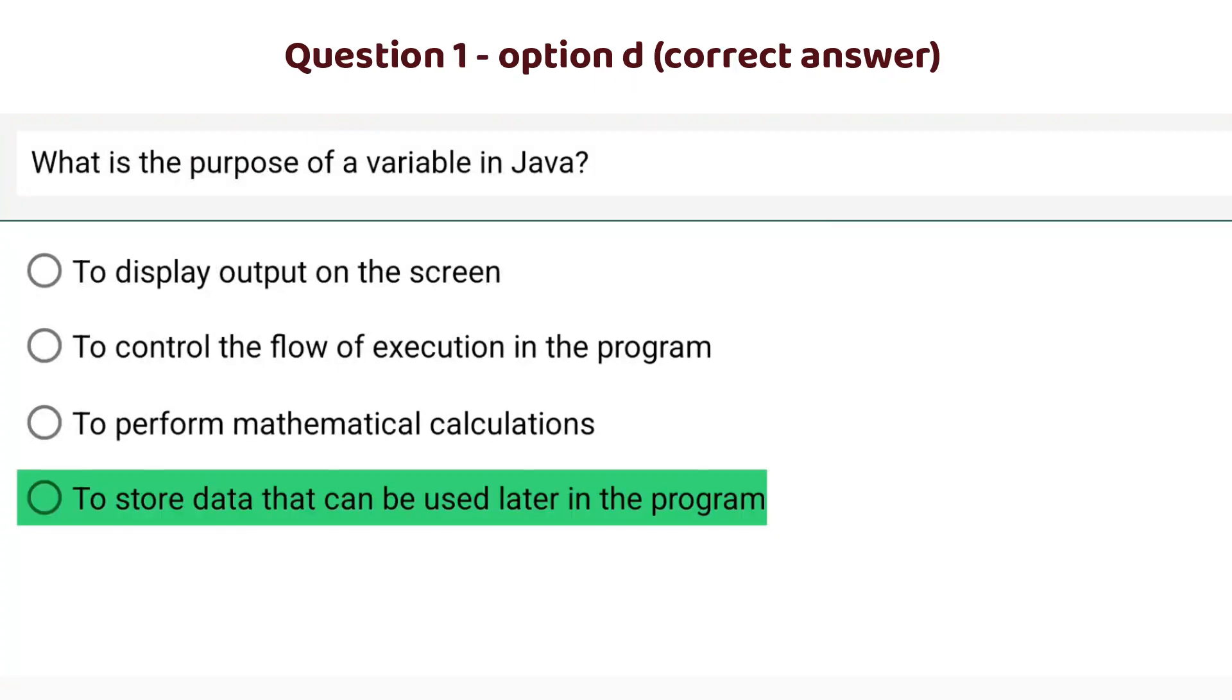The correct option is option number d: to store data that can be used later in the program. There is a variable a which stores the value apple. There is a variable b which stores the integer 5 in the memory.